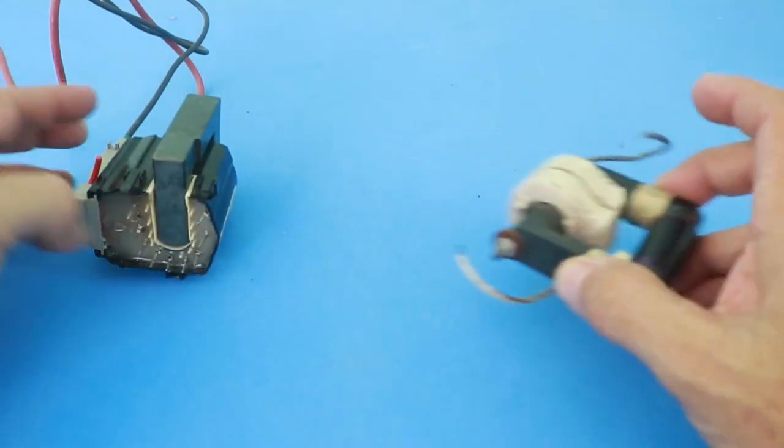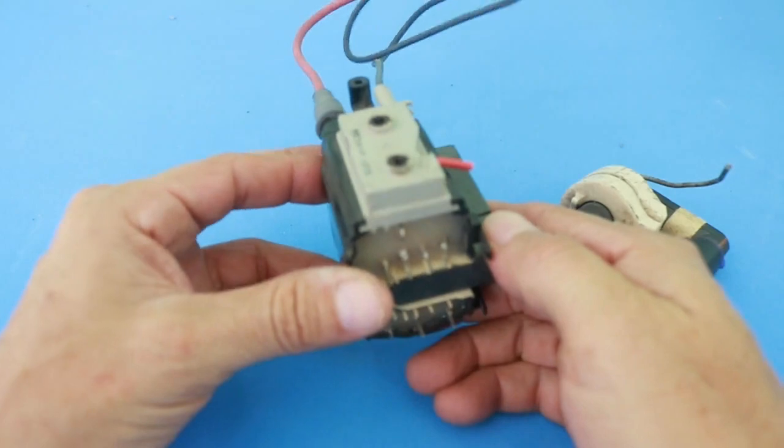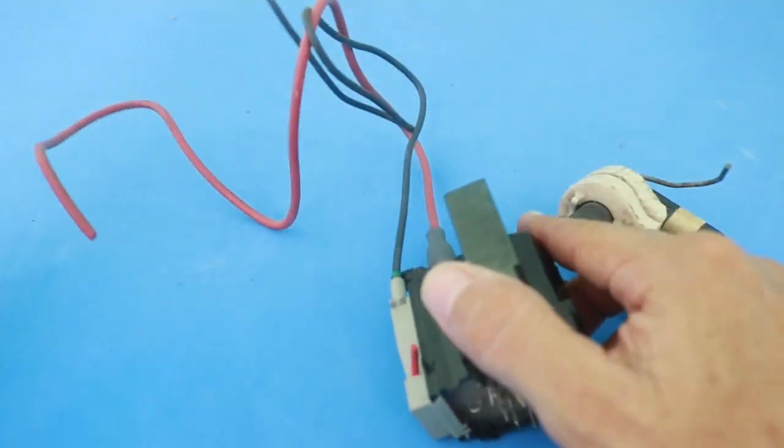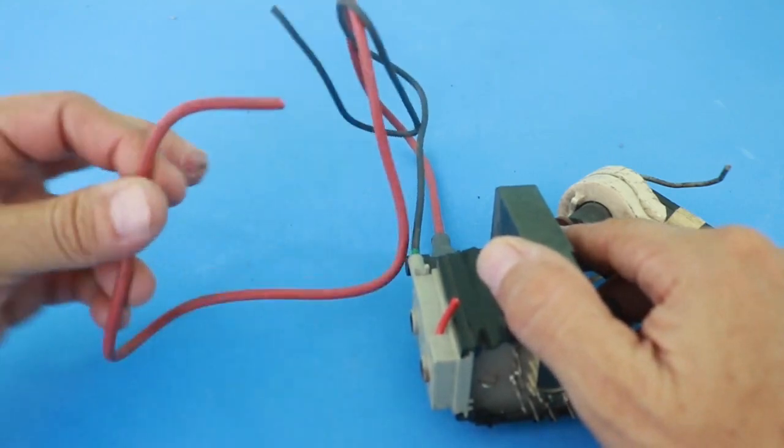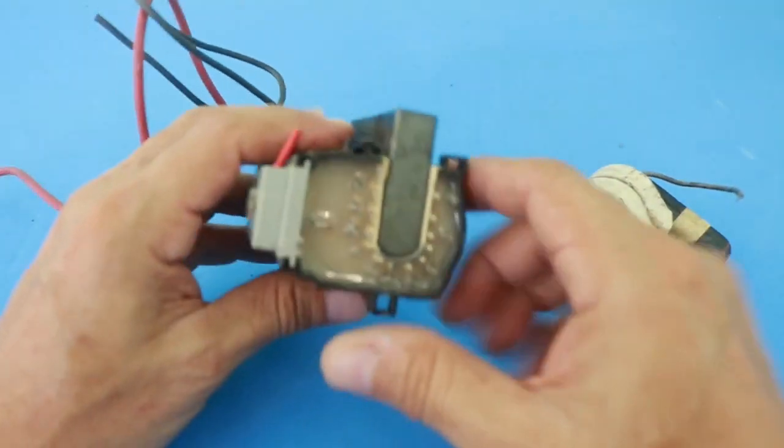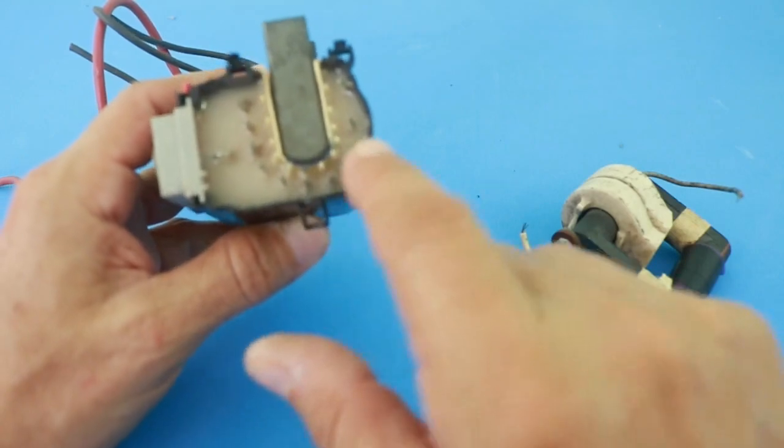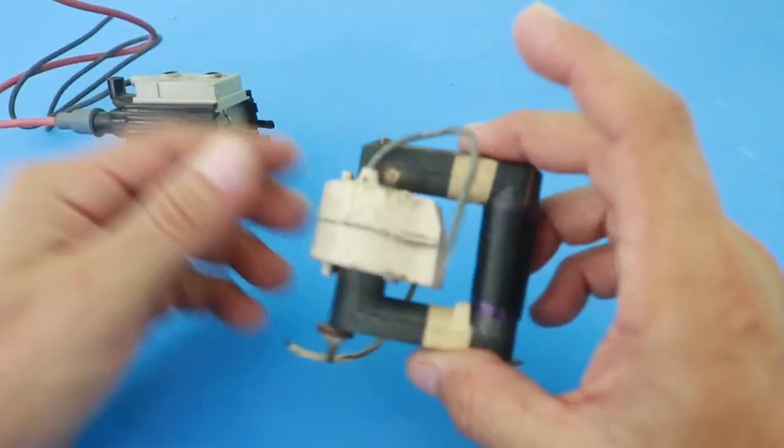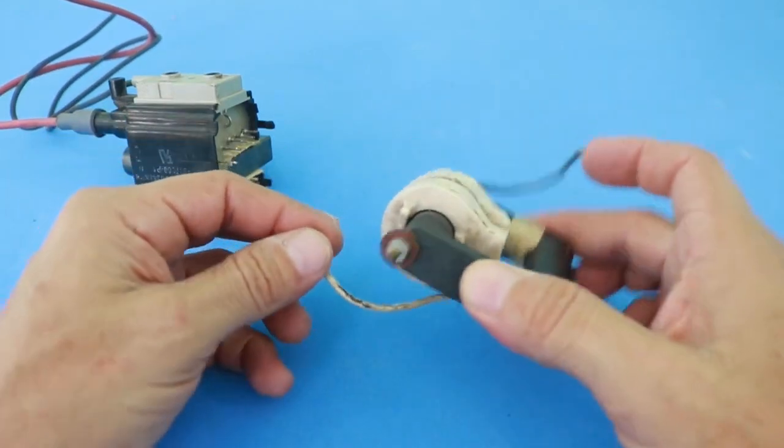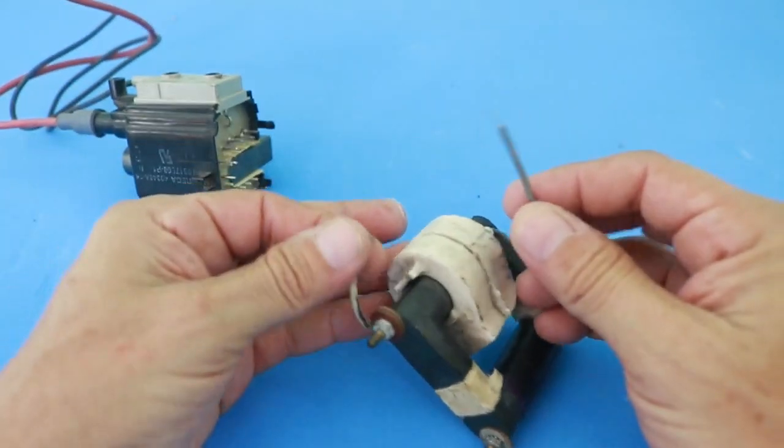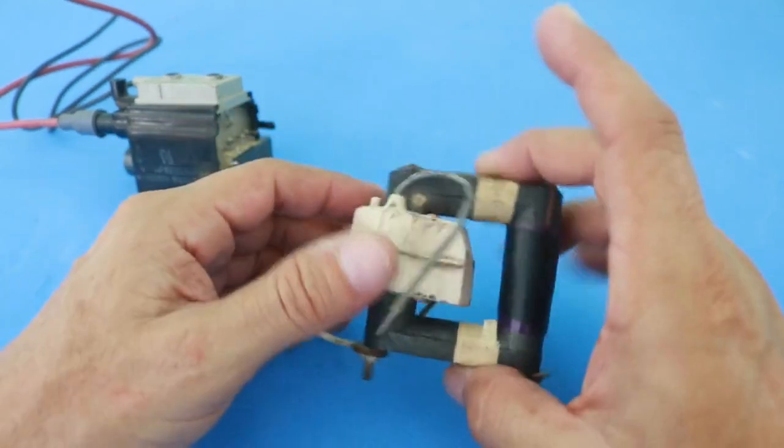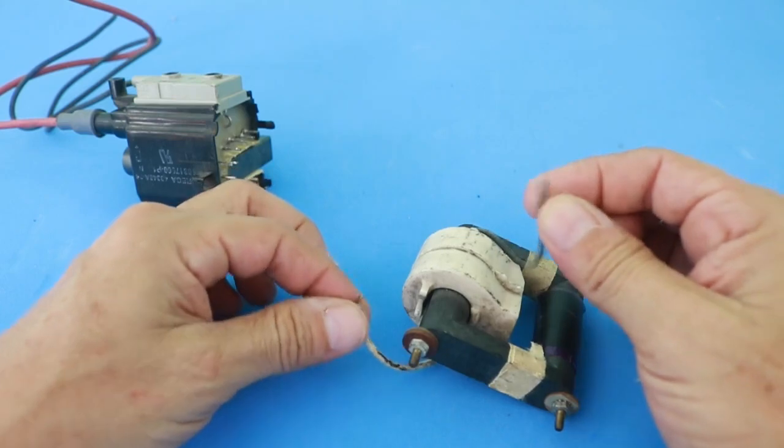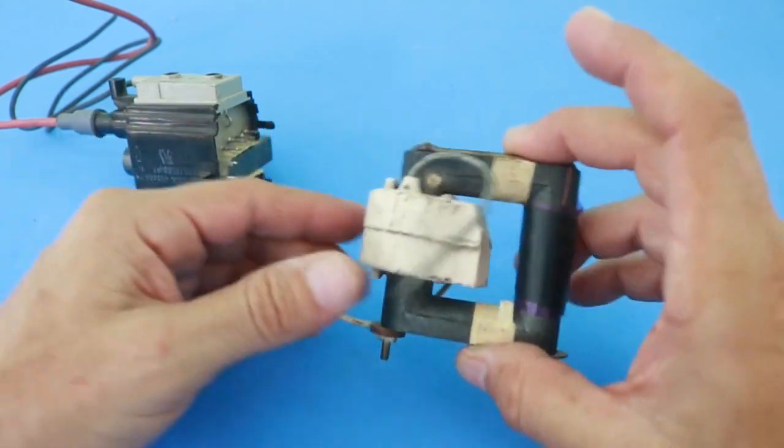Another difference is that modern flybacks such as this one have the positive high voltage output here but the negative may be any of the many pins at the bottom. In this case the high voltage output is just these two wires here. We need to put a primary here on the core and the high voltage will be obtained from these two wires.